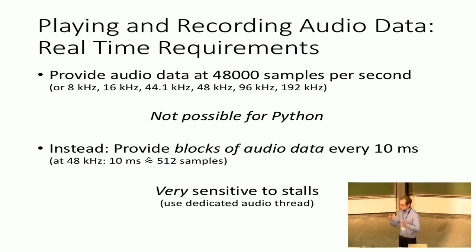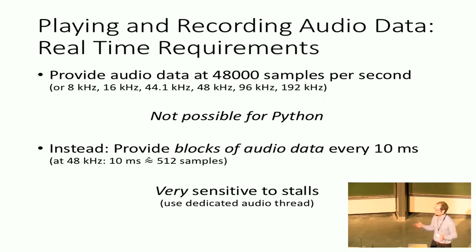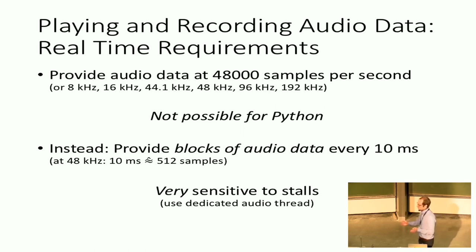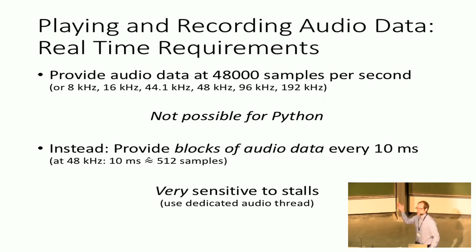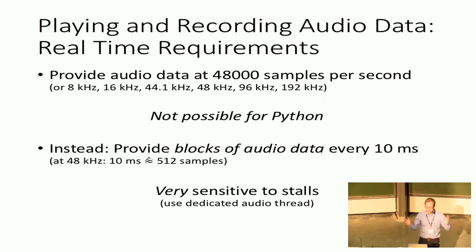Instead, we usually work with blocks of audio. Instead of providing 48,000 samples per second, let's provide Python 12 samples in a NumPy array every 10 milliseconds — comes out to the same number, but it's much easier to work with in Python. Make no mistake, though: when you have this 10 millisecond window, you really can only take 10 milliseconds. Take even one millisecond longer and you get nasty clicking artifacts. So this stuff is very performance sensitive.